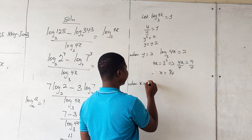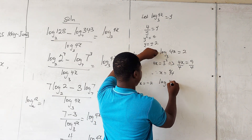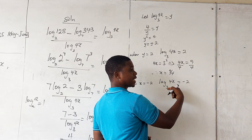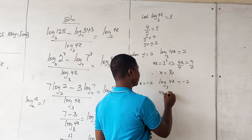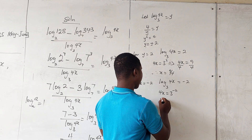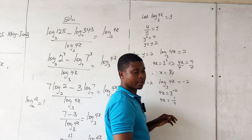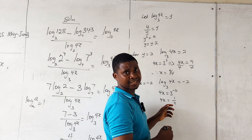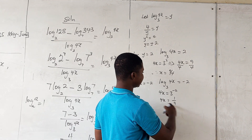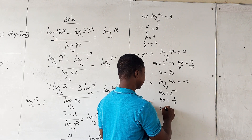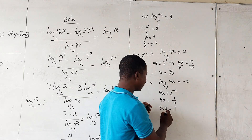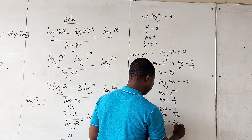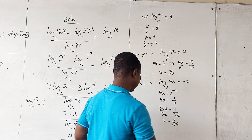When y equals negative 2, we have log 4x base 3 equals negative 2. Converting to index form, 4x equals 3 to the power negative 2, which is the same as 1 over 9. To make x the subject, we cross multiply: 36x equals 1. Dividing both sides by 36, x equals 1 over 36.